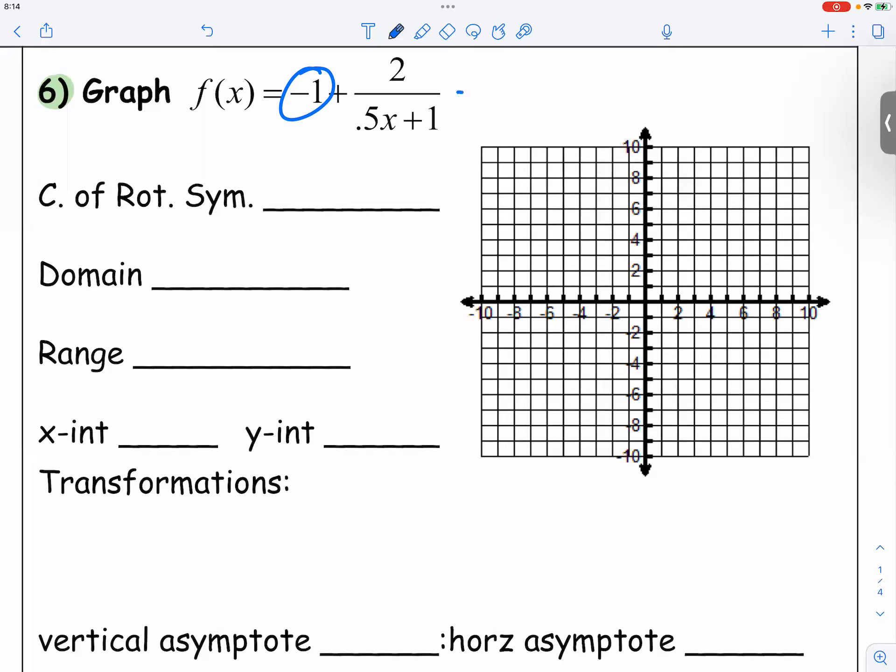The 0.5. So I'm going to get the 0.5 out. So 0.5 right here. And then I want to factor out the 0.5. So inside the parentheses, it will be x plus how many?